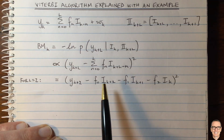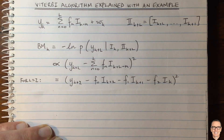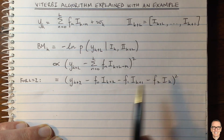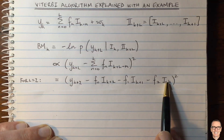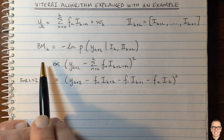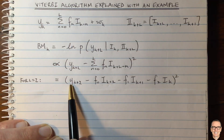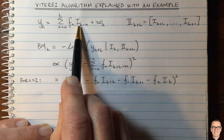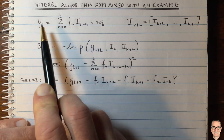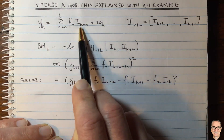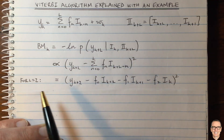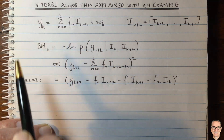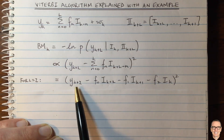For L equals 2, there's a direct path and also two inter-symbol interference components. This term here can be written as y_{k+2}, with three terms: one from the direct path at time k+2, and then another two from inter-symbol interference. You might ask why the branch metric is at time k when the measurement is at time k+2 — that's a very important aspect of the Viterbi. The reason is that when you have inter-symbol interference, each input data affects multiple outputs. For L equals 2, data going into the channel at time k affects measurements at time k, k+1, and k+2.